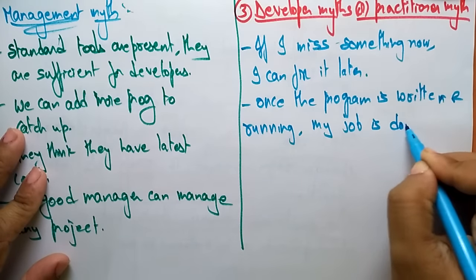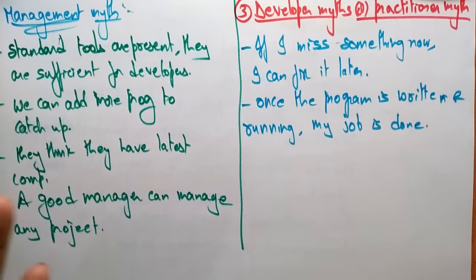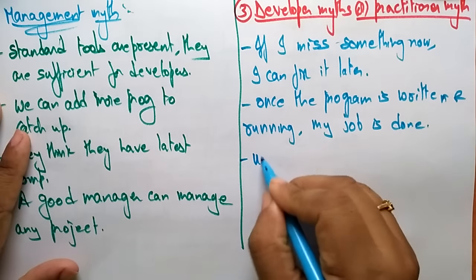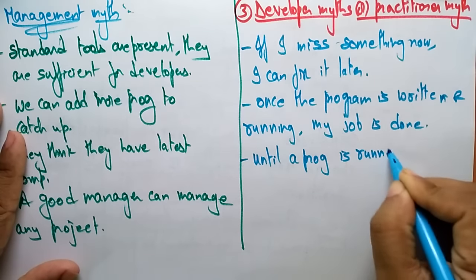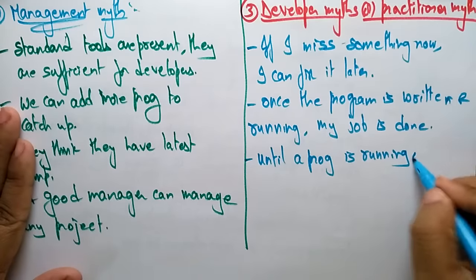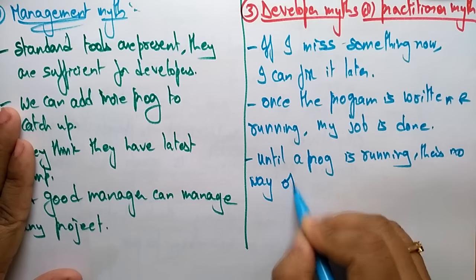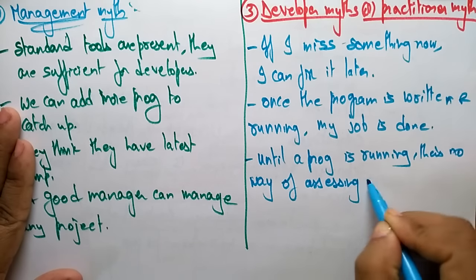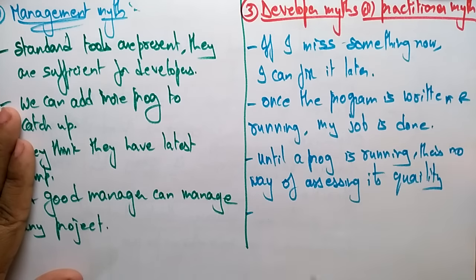The developer also thinks: once the program is written and running, my job is done. He believes that whatever he has done is correct. Another belief is that until a program is running, there is no way of assessing its quality.